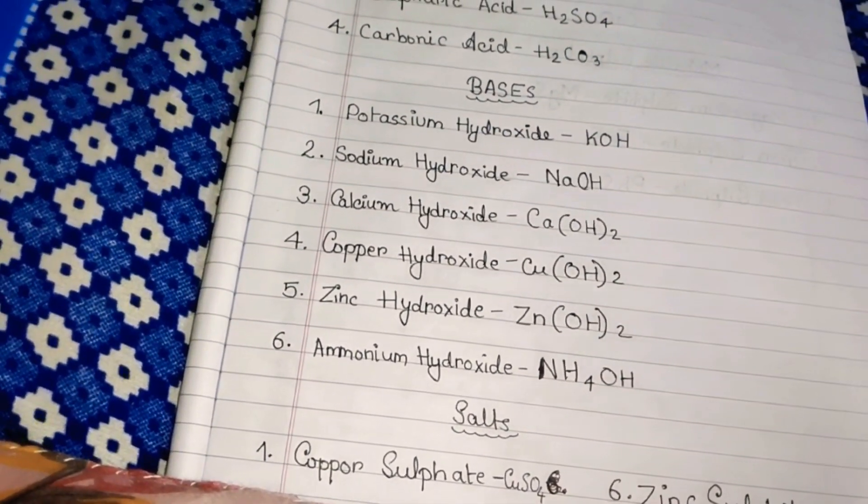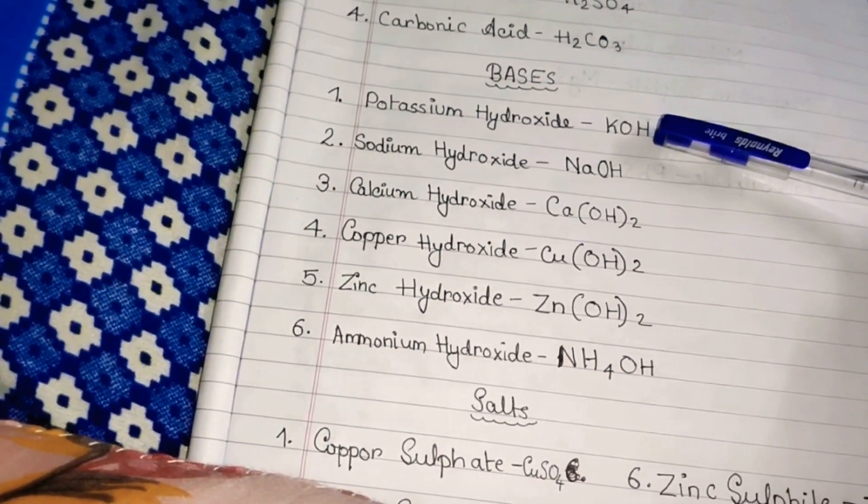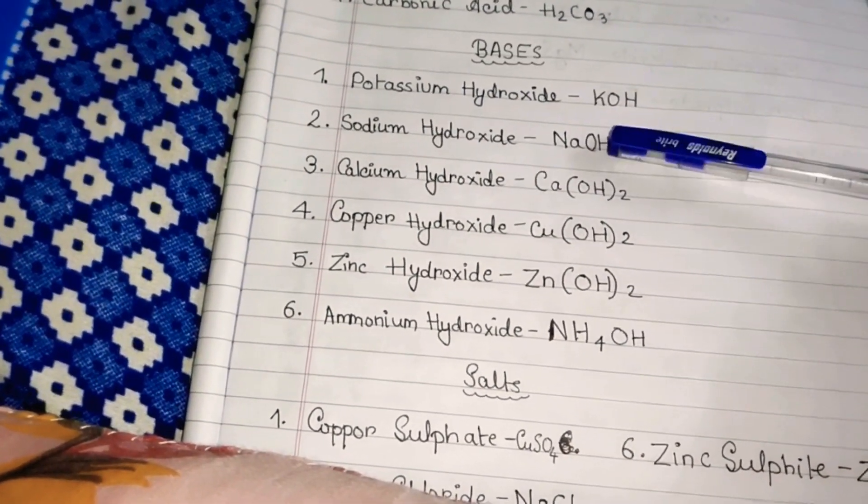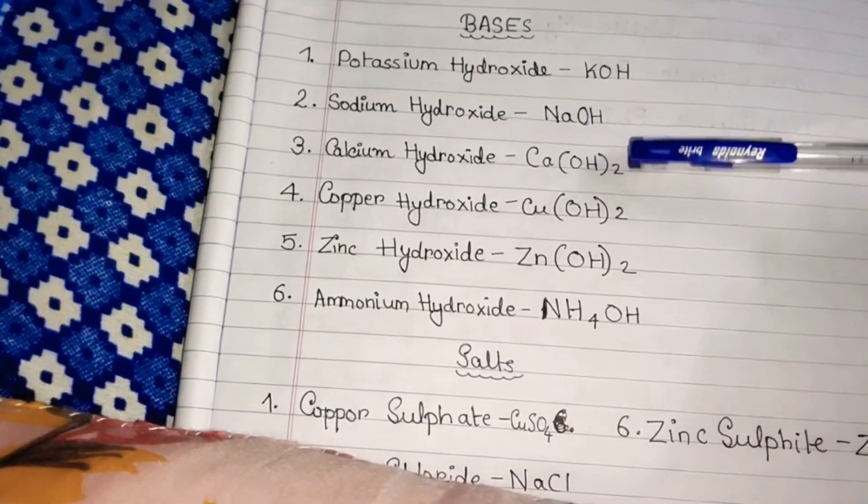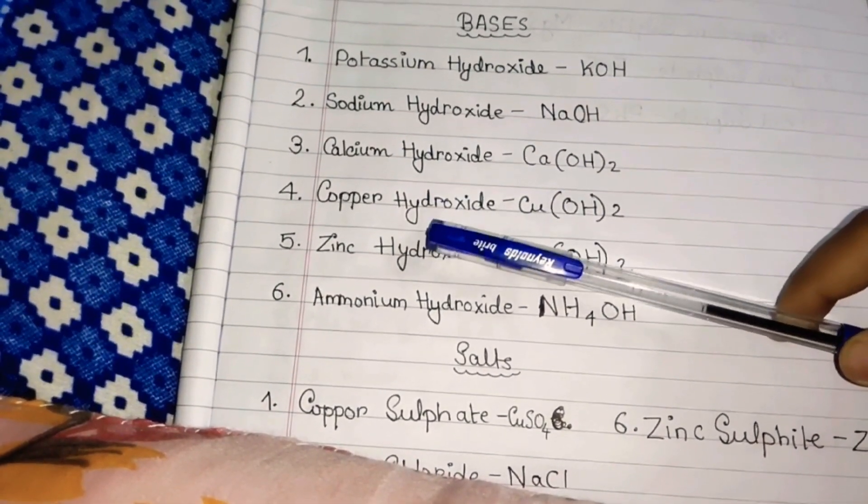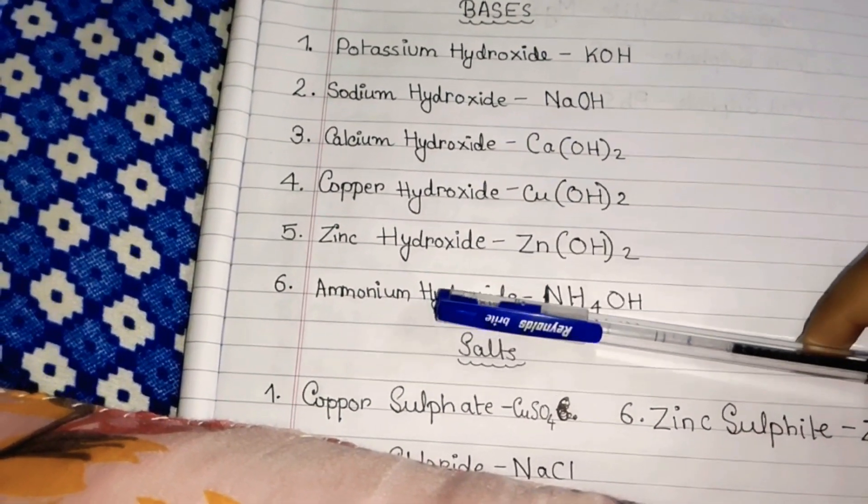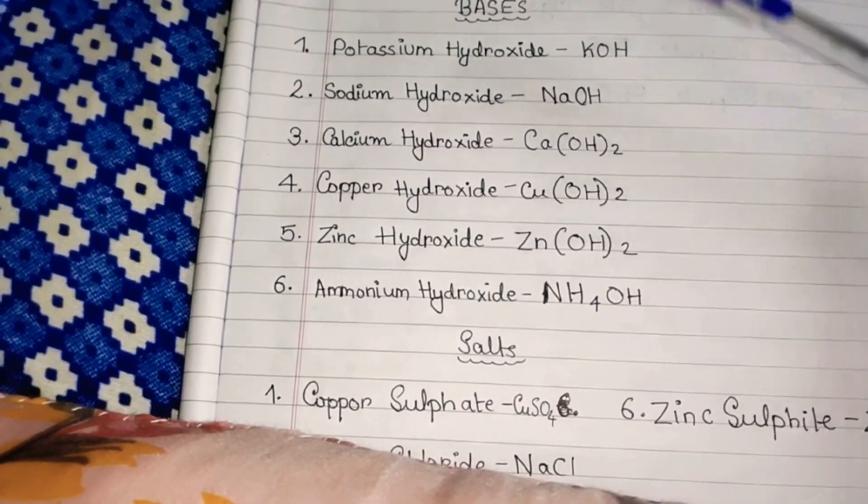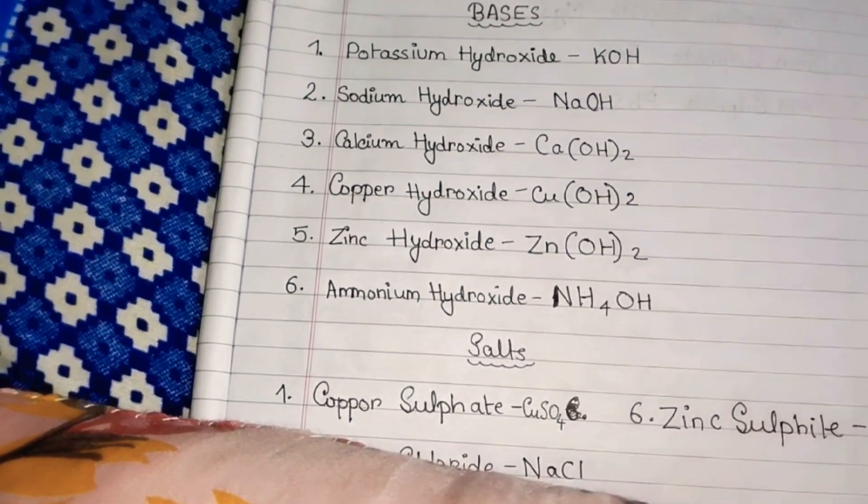Now let us know the bases formulas. Number one, Potassium Hydroxide KOH. Second, Sodium Hydroxide NaOH. Third, Calcium Hydroxide Ca(OH)2. Fourth, Copper Hydroxide Cu(OH)2. Sixth, Ammonium Hydroxide NH4OH. Now we will learn the salts formula.